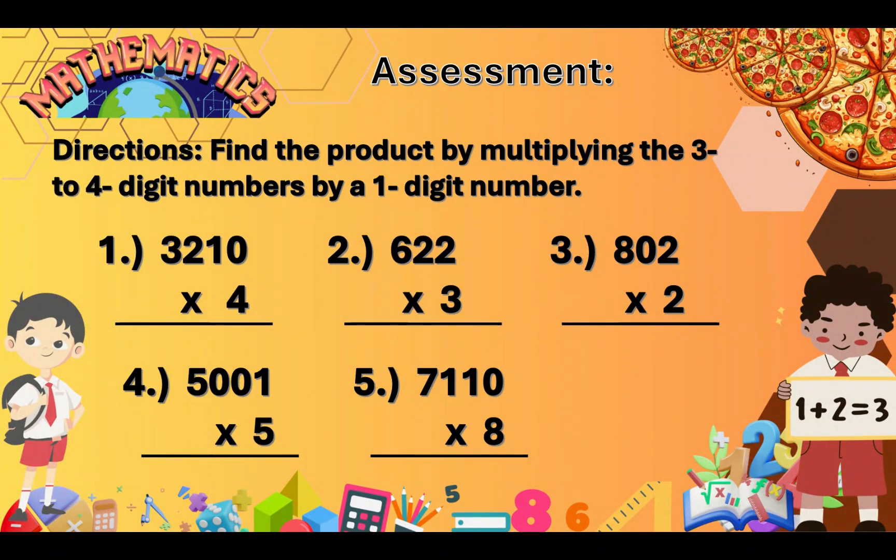And now, for your assessment, answer the following directions. Find the product by multiplying the 3 to 4 digit numbers by a 1 digit number. Number 1, 3,210 times 4. Number 2, 622 times 3. Number 3, 802 times 2. Number 4, 5,001 times 5. Number 5, 7,110 times 8. Good luck!